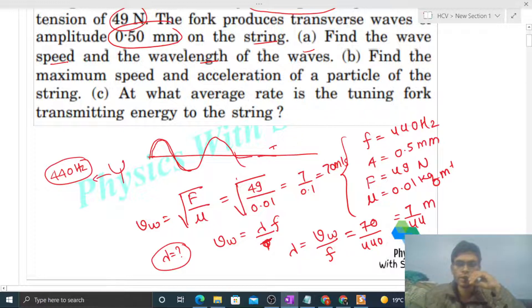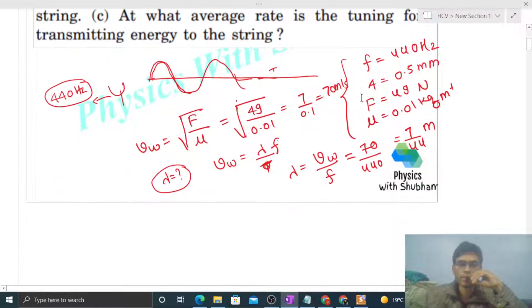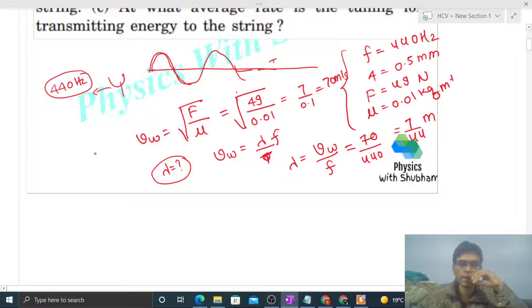Part b: Find the maximum speed and acceleration of a particle of the string. All the particles of the string will perform SHM in their respective positions. In SHM, maximum speed is amplitude × ω, and maximum acceleration is amplitude × ω². There's a minus sign, but I'm talking about the magnitude.